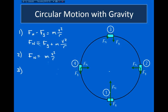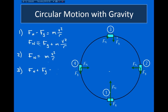Now considering the top of the circular path, we see that the gravitational force and the normal force are both pointing inwards towards the center of the circular path. So it's the sum of these two forces that is causing the centripetal acceleration — meaning the normal force plus the gravitational force equals mv²/r.